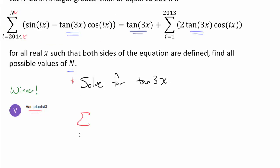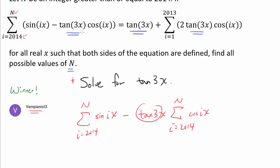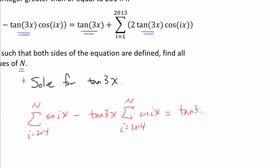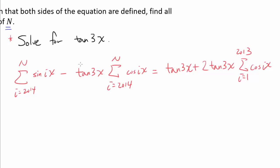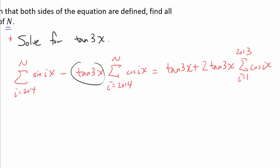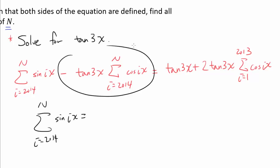To solve for tangent of 3x, let's start by breaking apart the summation. We have the sum from 2014 to n of sine of ix, minus tangent of 3x times the sum from i equals 2014 to n of cosine of ix — we can take tangent of 3x outside the summation since it's independent of i. This equals tangent of 3x plus 2 tangent of 3x times the sum from i equals 1 to 2013 of cosine of ix.